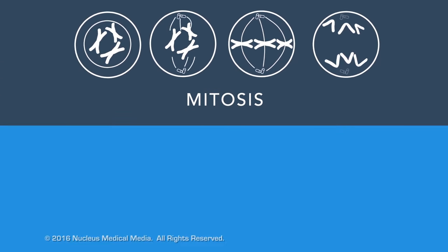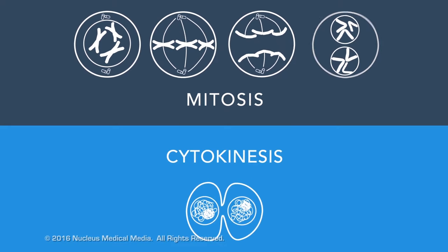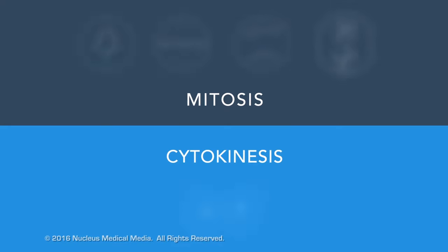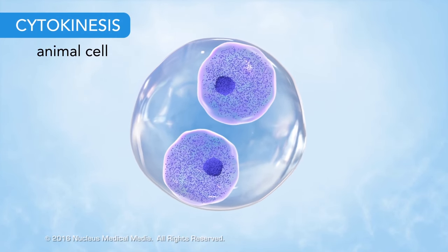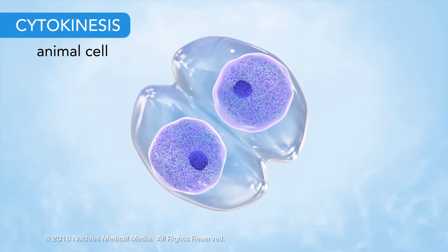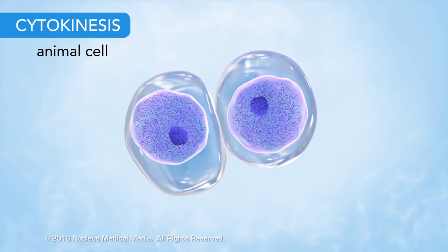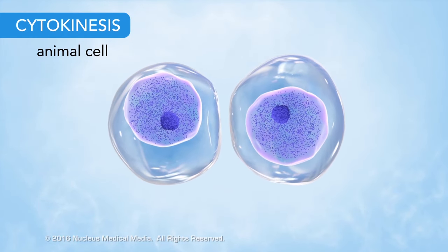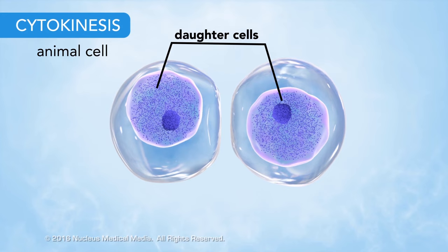The final step of the M phase is cytokinesis, the division of the cytoplasm. In animal cells, cytokinesis occurs through the inward movement of the cell membrane. This progressively pinches the cytoplasm until two identical daughter cells form.